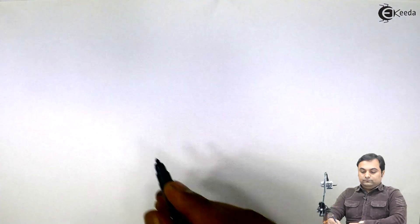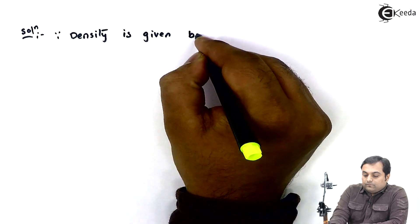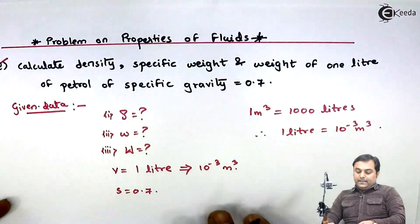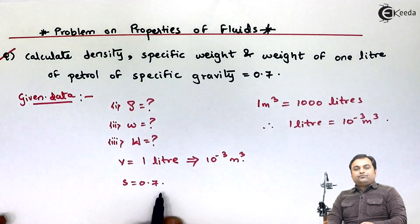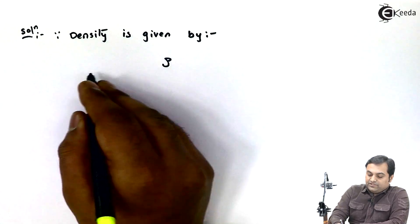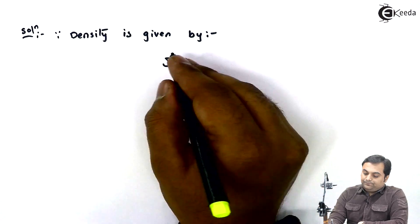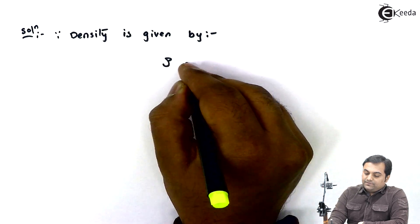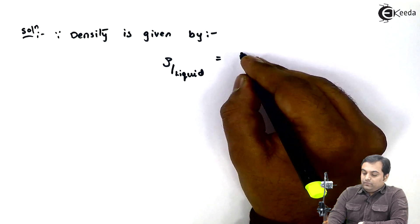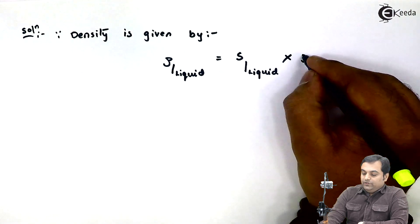The first part is density. Since density is given by rho, to get this density I will use the formula of specific gravity. The density of the liquid is equal to the specific gravity of the liquid multiplied by the density of the standard liquid, which is water.